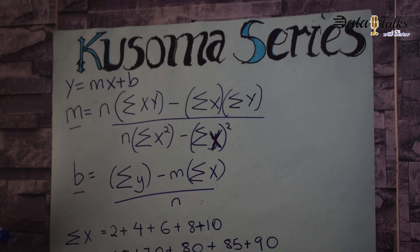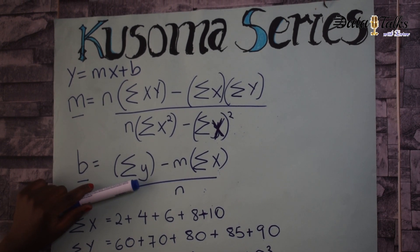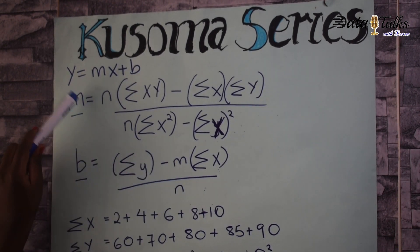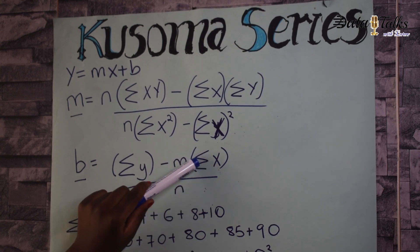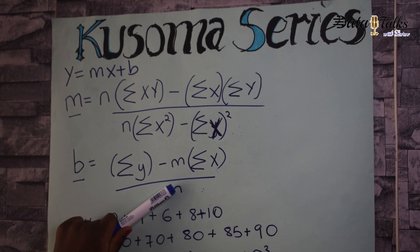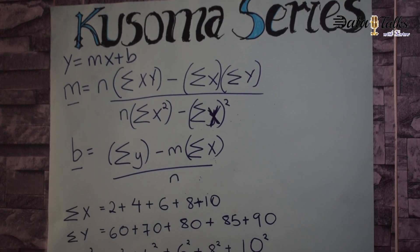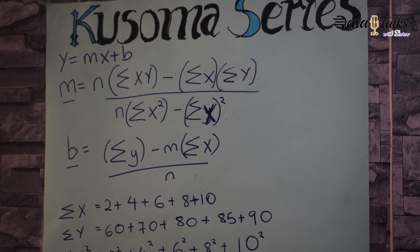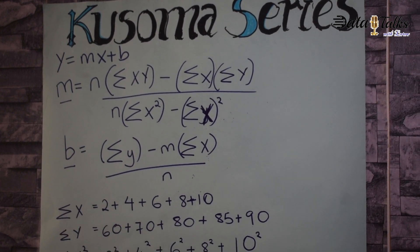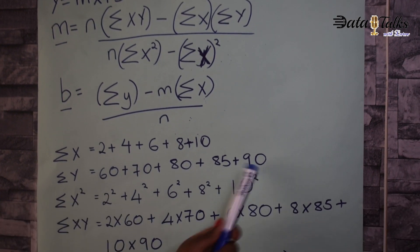The formula to get b is: the summation of y minus m multiplied by the summation of x, divided by the number of outcomes. Given our data, x has values 2, 4, 6, 8, and 10, and y — the dependent variable — has values 60, 70, 80, 85, and 90.